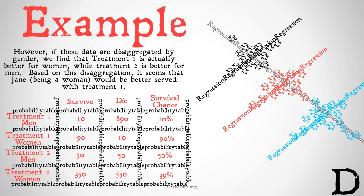However, if these data are disaggregated by gender, we find that treatment 1 is actually better for women — it just happens that a lot of men in the sample size took treatment 1 — and treatment 2 is better for men. Based on this disaggregation, it seems clear that Jane, being a woman, would be better served with treatment 1.